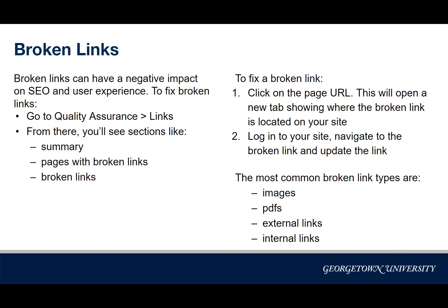Now let's move on to broken links. Broken links can have a negative impact on the user's experience on your site as well as your search engine ranking. To view broken links, go to Quality Assurance — this is different from the Accessibility section — then Links. From Links, you'll see sections like Summary, which gives an overview of broken link status; Pages with Broken Links, which lists all pages that have broken links; and Broken Links, which lists all broken links on your site and how many pages they're on.